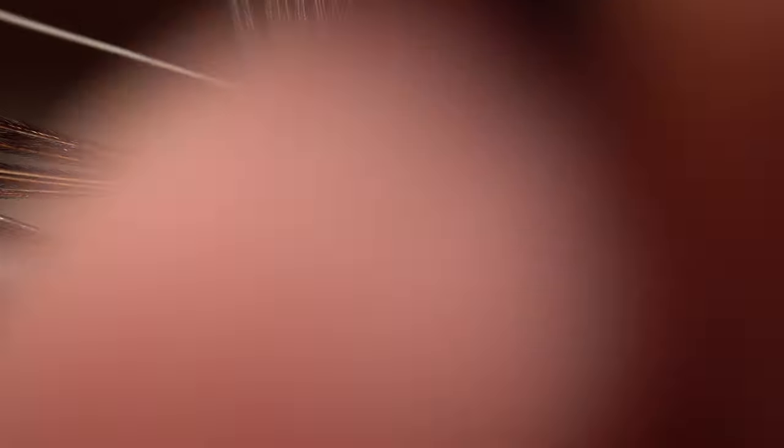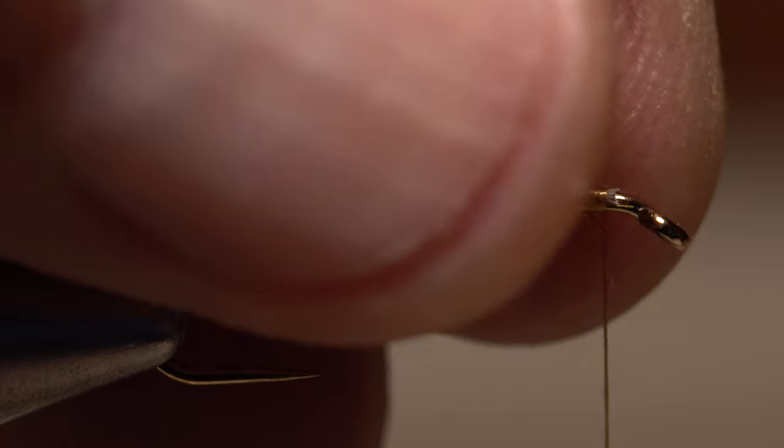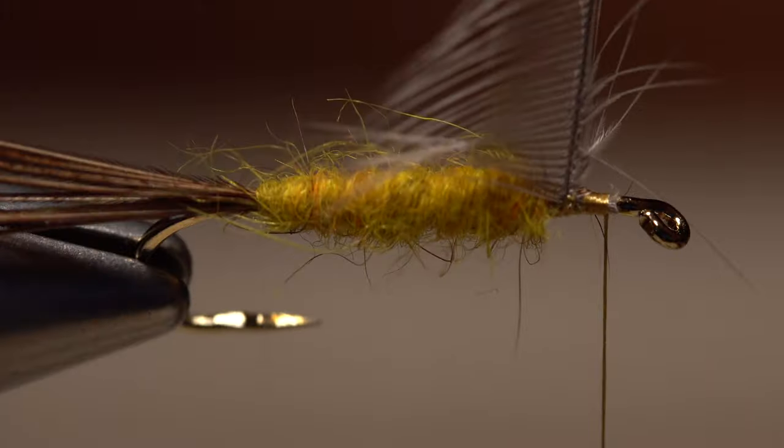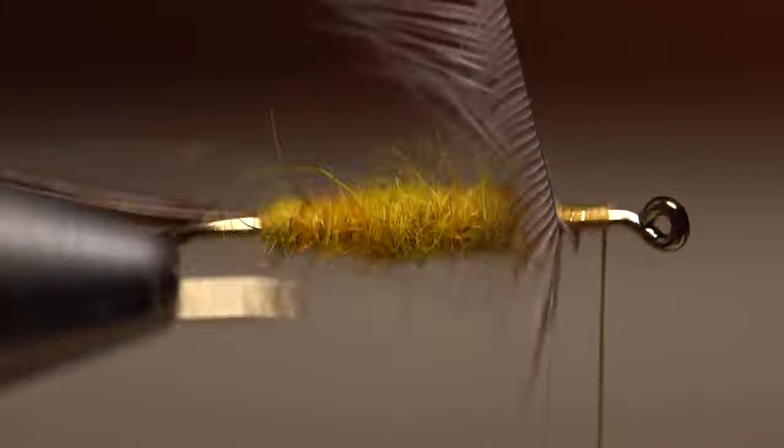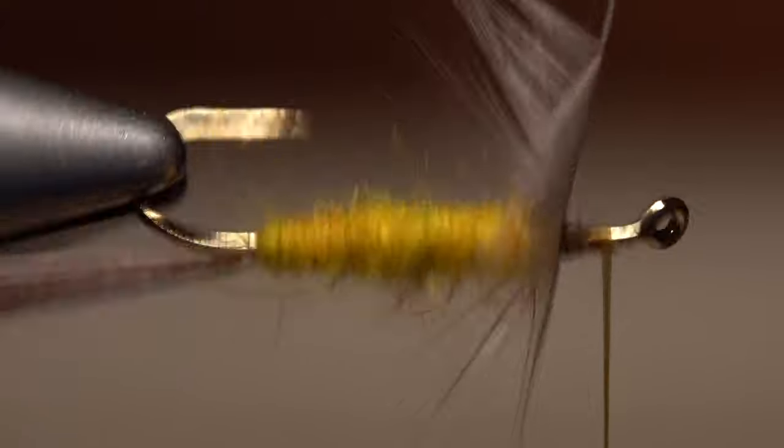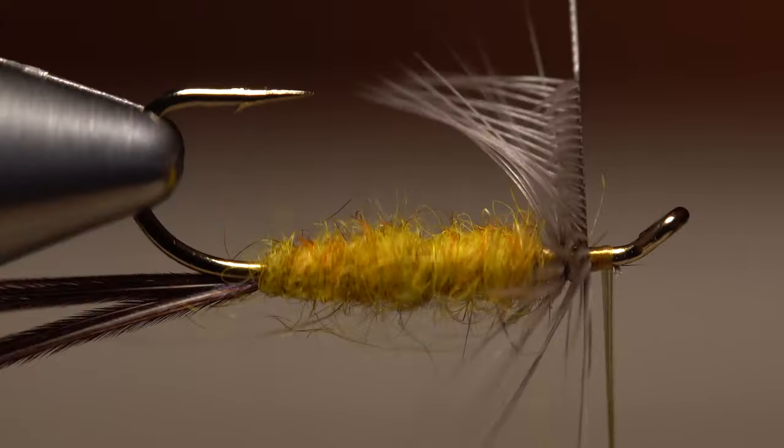Get hold of the stem with your fingers or hackle pliers and use the fingertips of your left hand to preen and fold the fibers rearward. All they need to do is angle back a little bit. Start taking touching wraps or turns with the hackle to build up the collar. This is another place where a rotary vise comes in real handy.